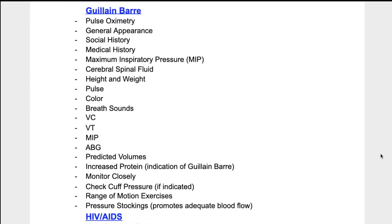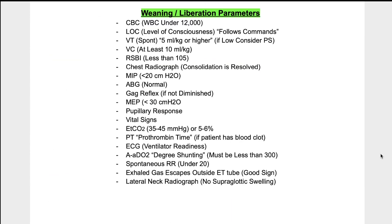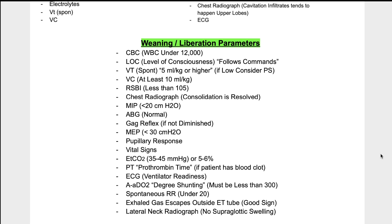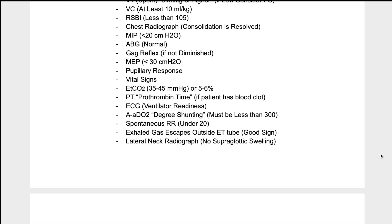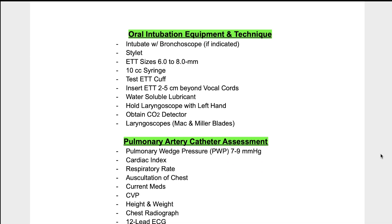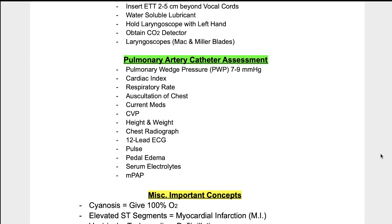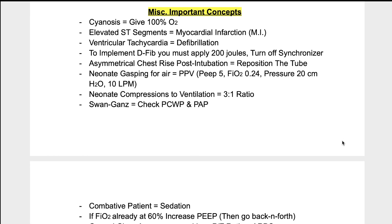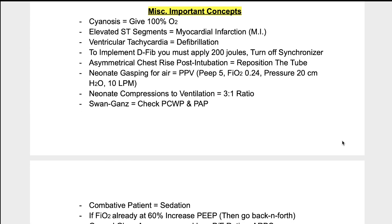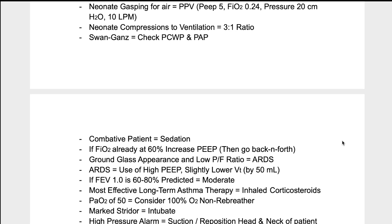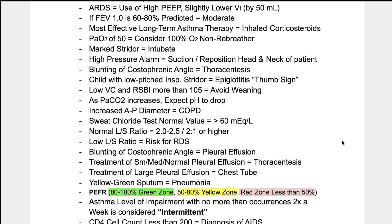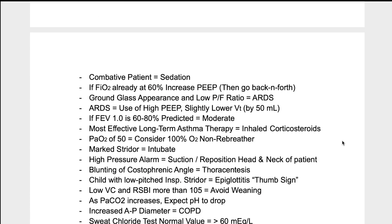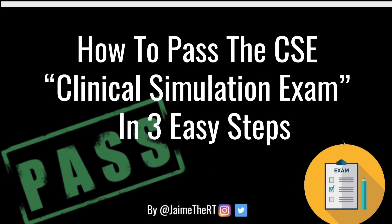The outline also includes weaning parameters and norms, RSBI, intubation equipment and technique, and pulmonary artery catheter assessment with the answers you'll be selecting for each. Items highlighted in yellow are random facts and things you need to know that will help you during the simulation. That's pretty much it — and that's how you pass the CSE exam.